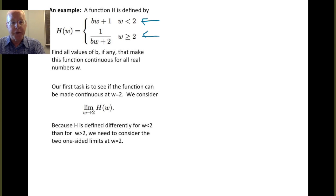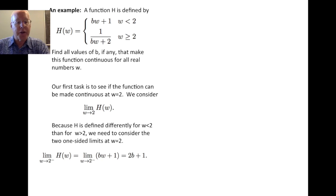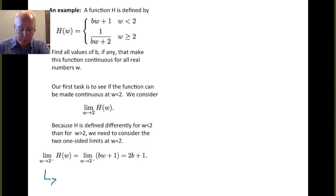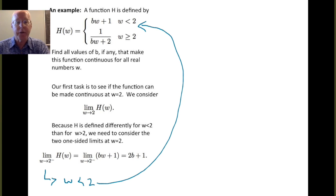So to consider continuity we have to consider the limit as w approaches 2 of h of w. Because h is defined differently for w less than 2 than for greater than 2, we need to consider the two one-sided limits at w equals 2. So let's consider the left-hand limit first. The limit as w approaches 2 from the minus side or from the left of h of w. Now in this situation, remember w approaches 2 from the minus side means w is less than 2. That's the left-hand approach. And if w is less than 2 then we use this upper line of the definition. So when we compute the limit we can replace h of w in this case by bw plus 1. This is just a linear function. The b is a constant, the w is the variable. And as w gets close to 2, this comes out to be 2b plus 1.